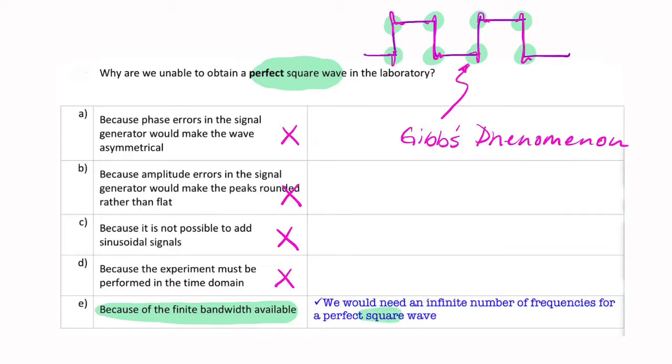It said we would need an infinite number of frequencies for a perfect square wave. And everything that we've said about a square wave will apply to any other wave. If you wanted a perfect triangular wave or a perfect anything—anything other than a sine wave—it's impossible to reproduce in a lab perfectly for the same reason.